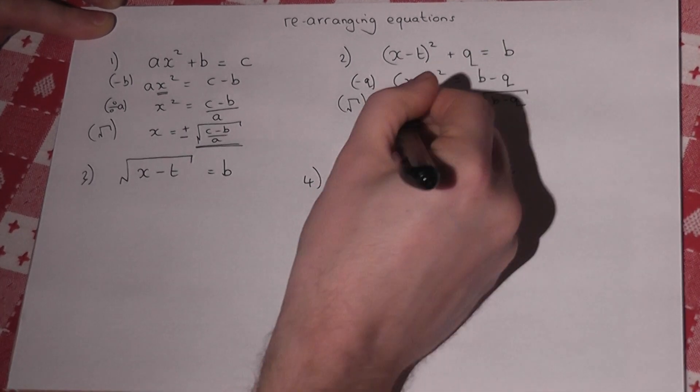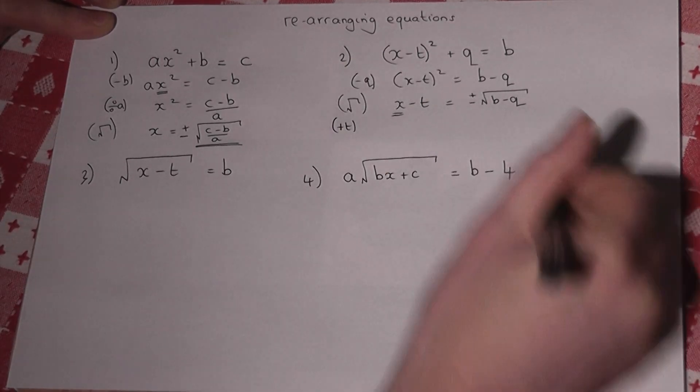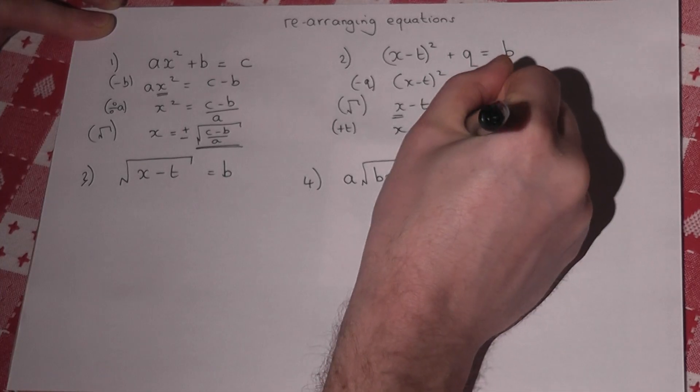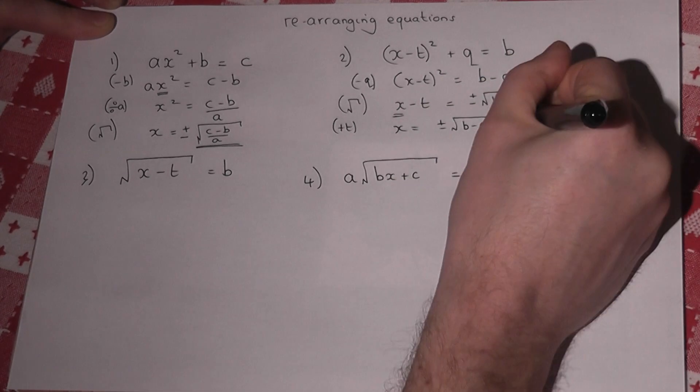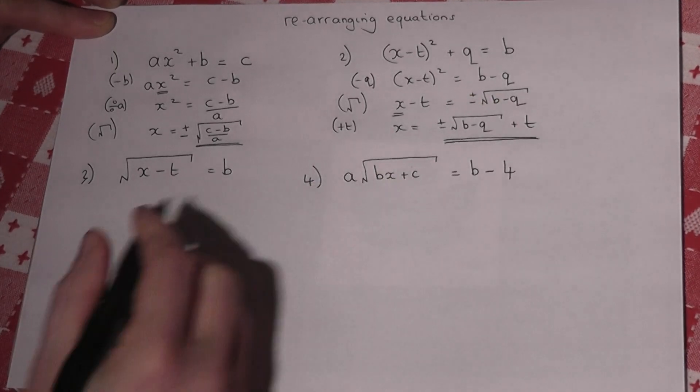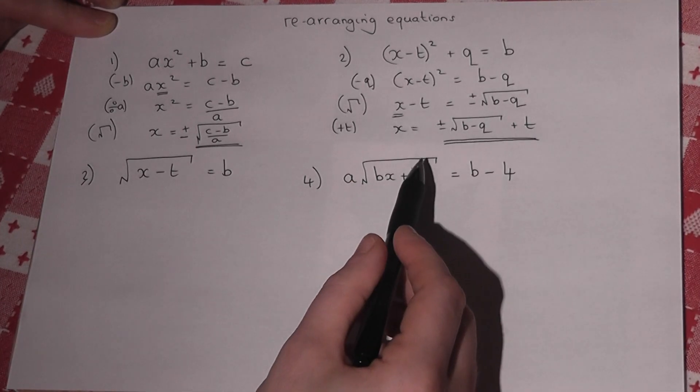And then to finish off, I want x by itself, so I add t. So x equals plus or minus the root of b minus q plus t. And there we go. So that's when we have to square root at the end. We get a plus and a minus solution.